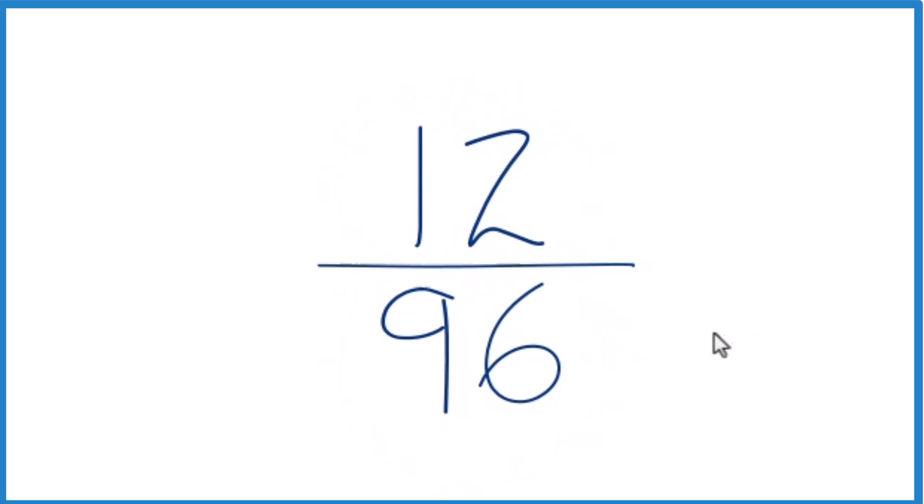To do that, we need to find a common factor, something that goes into both 12 and 96 evenly. We're looking for a whole number.